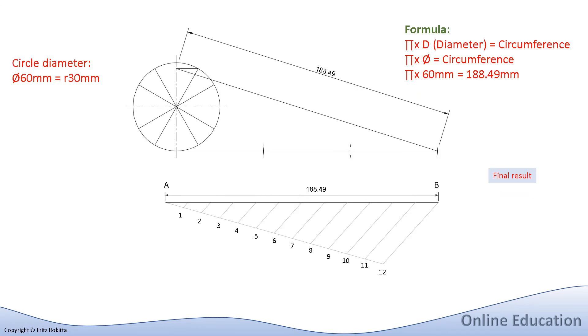And finally, here is an illustration and presentation of our final result, where we have determined the circumference firstly for the baseline of our development, and our formula has been indicated and all our constructions have been clearly labeled. Well done and thank you for watching this tutorial. I hope you enjoyed it and that you have learned something about the circumference of a circle and how to divide a line into equal segments. See you next time.